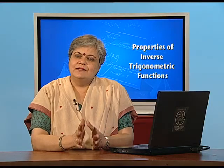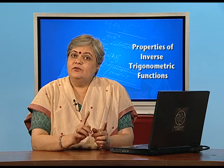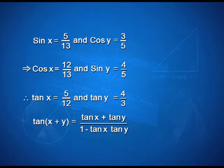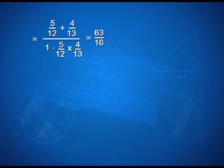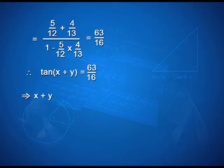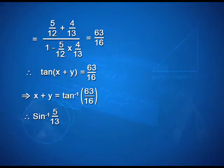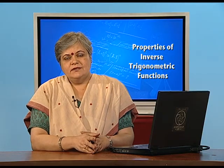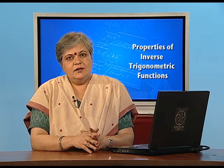Once we have tan(x) and tan(y), we can find tan(x + y) = (tan x + tan y)/(1 - tan x·tan y). Substituting and solving gives 63/16. So tan(x + y) = 63/16, and therefore x + y = tan⁻¹(63/16). Since x = sin⁻¹(5/13) and y = cos⁻¹(3/5), the problem is solved. It was not so very challenging — just keep calm about it and you will get through it.